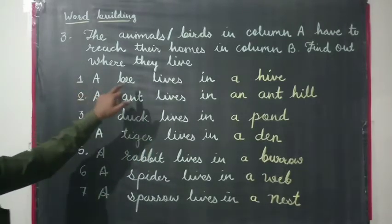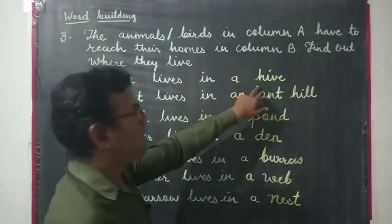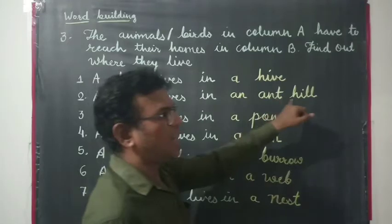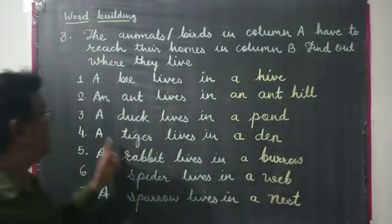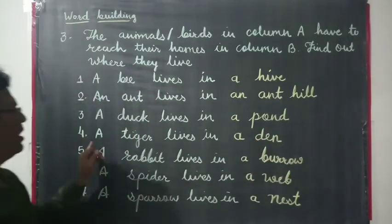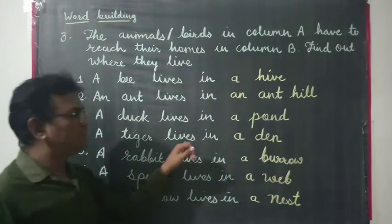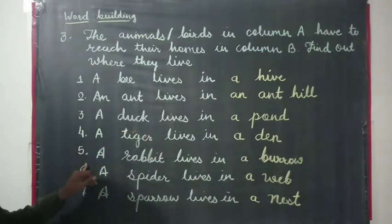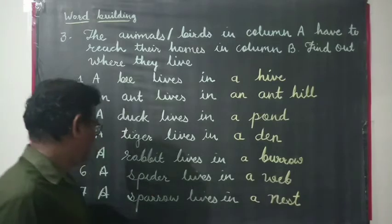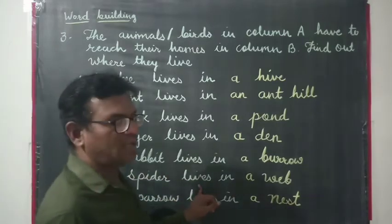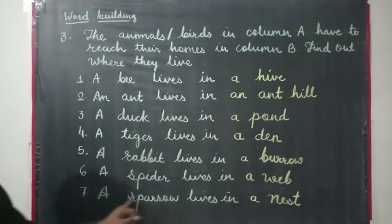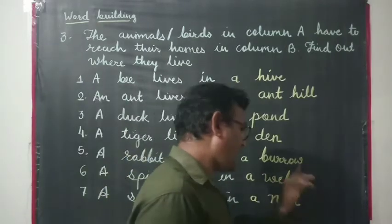A bee lives in a hive. An ant lives in an ant hill. A duck lives in a pond. A tiger lives in a den. A rabbit lives in a burrow. A spider lives in a web. A sparrow lives in a nest.